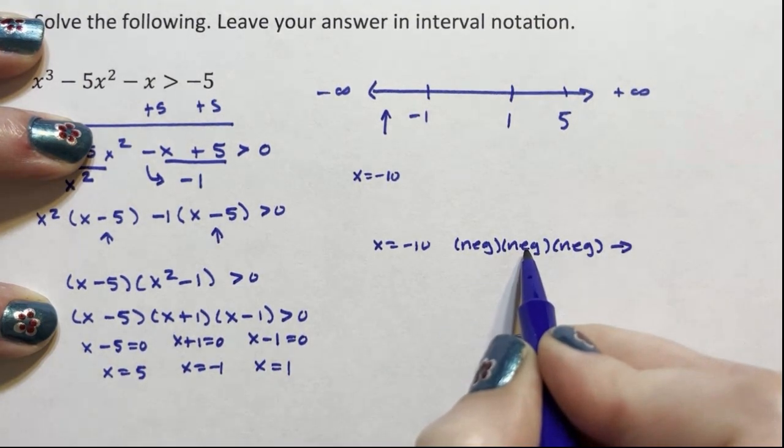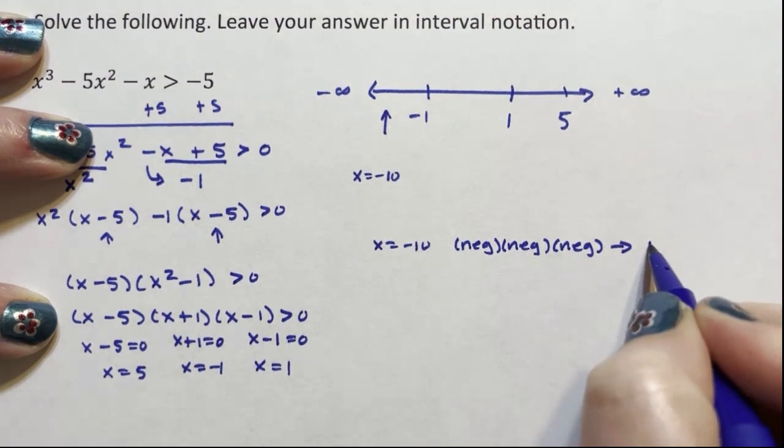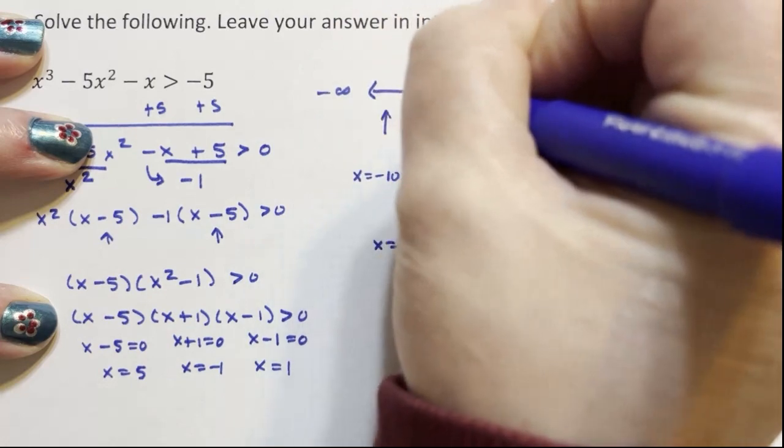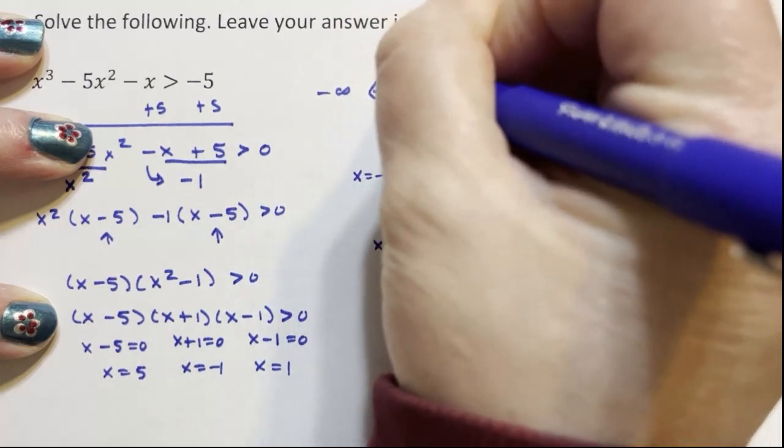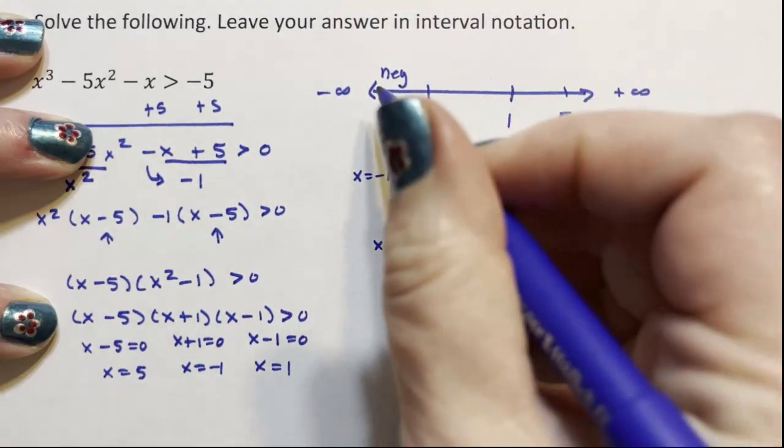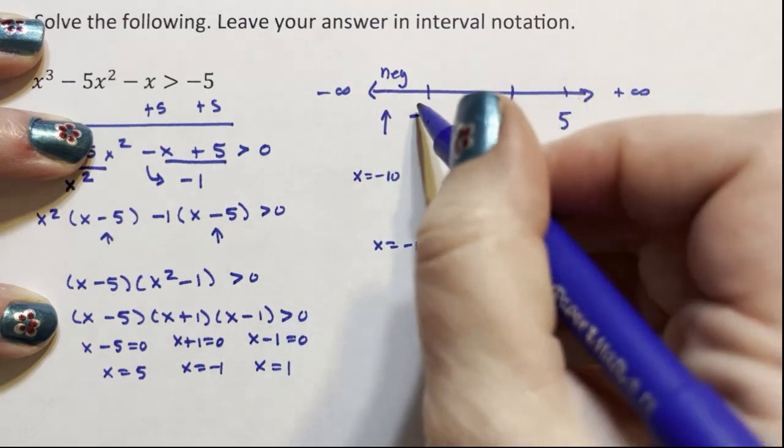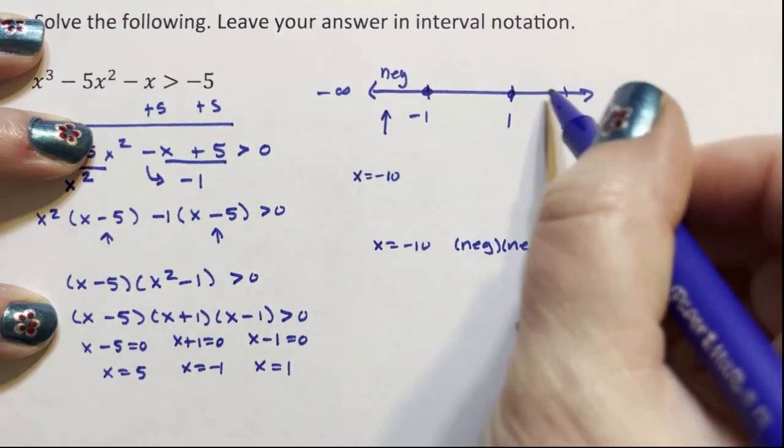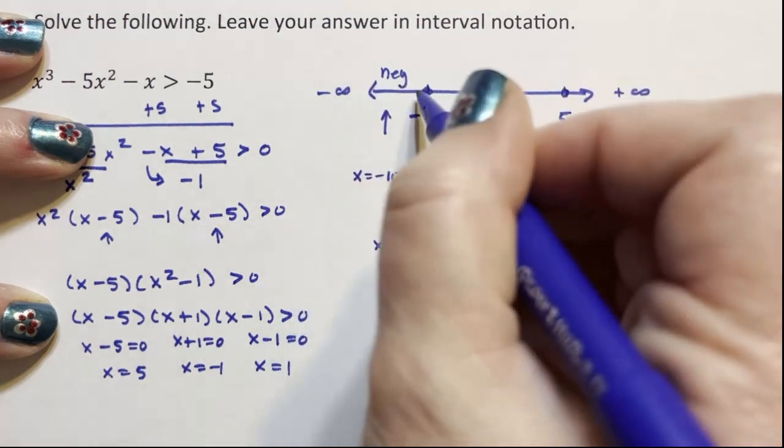A negative times a negative is positive. A positive times a negative is negative, which means everything from negative infinity to negative 1 is negative. You can only change from negative to positive when you cross the axis, when you cross one of these points. So everything from here to here is negative.